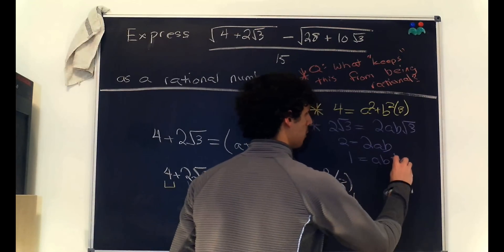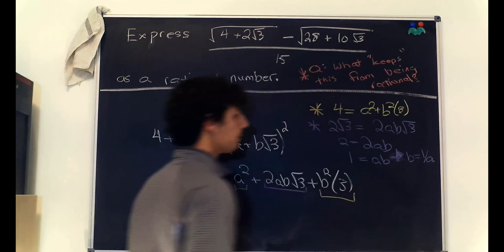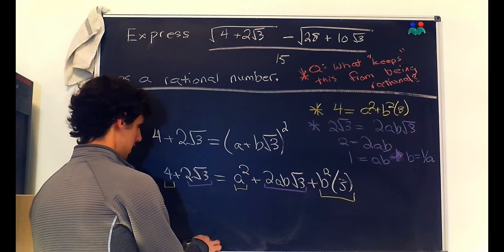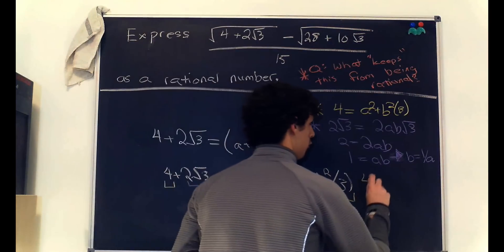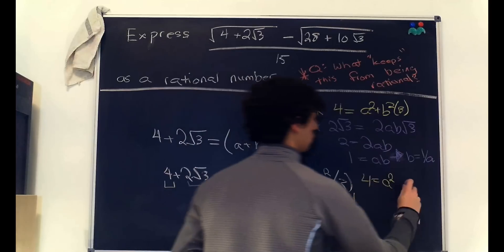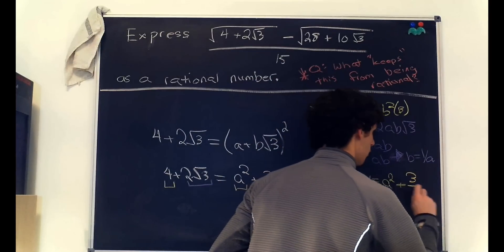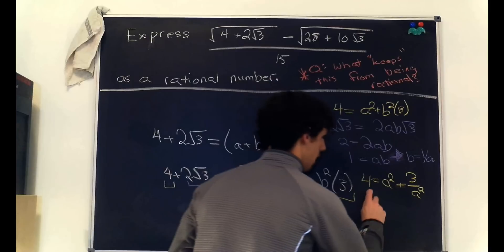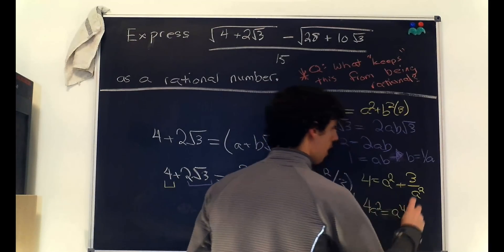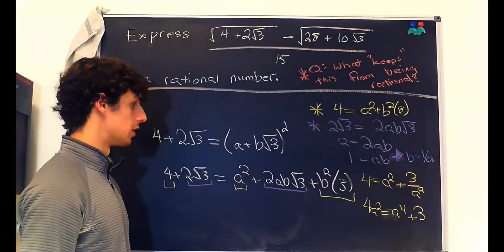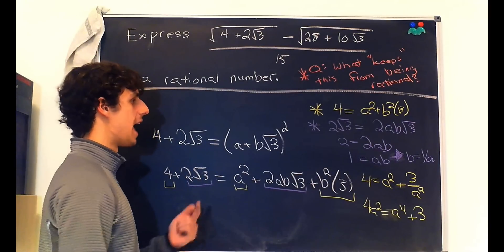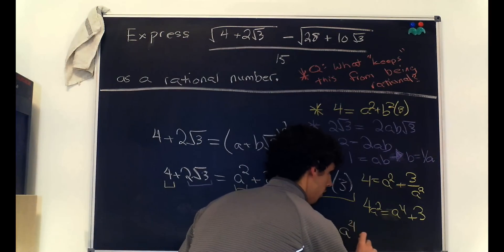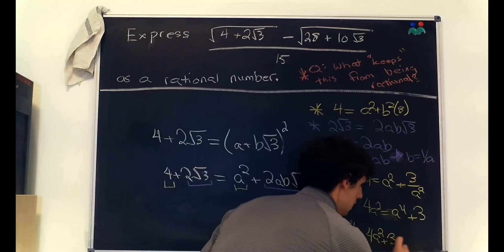Then we have 2 times the square root of 3 equals 2ab times the square root of 3. In this purple equation, the square roots of 3 cancel, so we get 2 equals 2ab, which simplifies to 1 equals ab. Now we can use this to make a substitution back into the yellow equation. Substituting gives b equals 1 over a, and plugging into the yellow equation: 4 equals a squared plus 3 over a squared. Multiplying through by a squared gives 4a squared equals a to the fourth plus 3, which rearranges to a to the fourth minus 4a squared plus 3 equals 0.